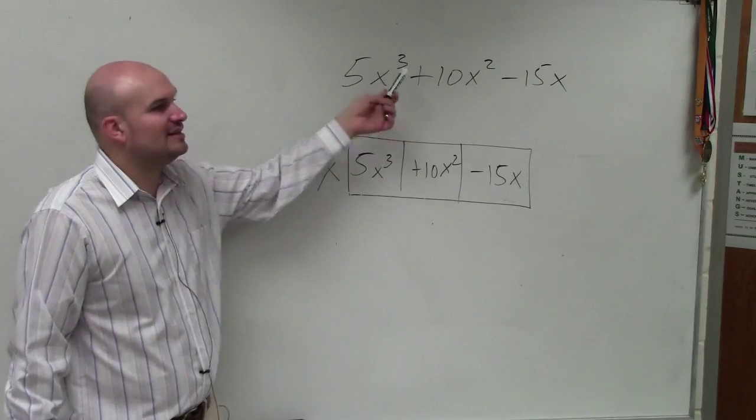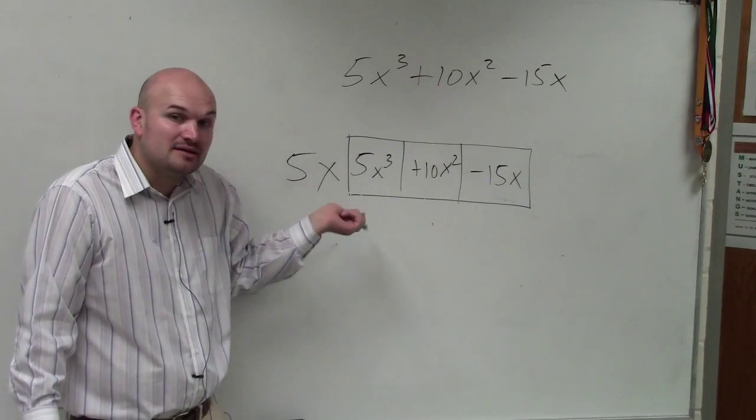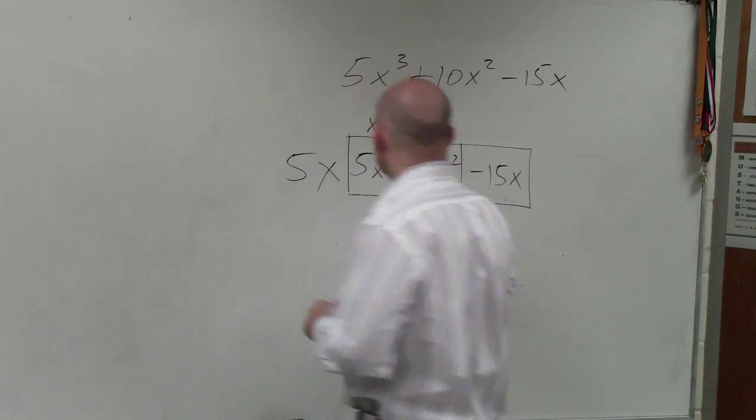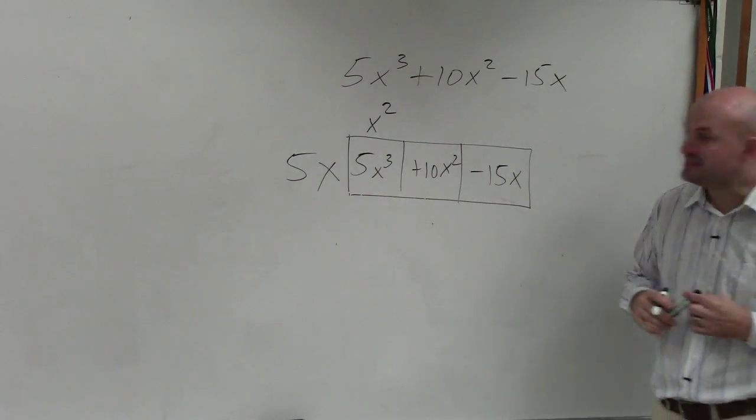So instead of thinking of it like dividing it out, you're basically just saying that's the common side length. Now 5x times what gives me 5x cubed? x squared. 5x times what gives me 10x squared?